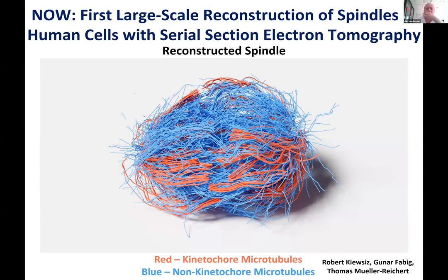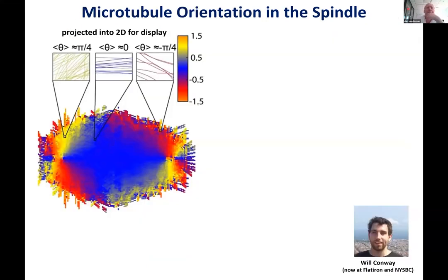We've been analyzing this data and trying to combine it with measurements from light microscopy to learn about different things in the spindle, including the behavior of kinetochore microtubules. Will Conway, who was a graduate student in my lab and is now a postdoc jointly between Flatiron and the New York Structural Biology Center, tried to analyze and understand what determines the orientation of microtubules in the spindle.